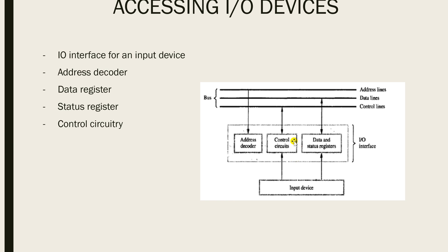Now let's see how data transfer takes place between the CPU and a connected device. Each I/O device has a set of unique addresses. When a processor places a particular address on the address line, the device recognizes that address and responds to commands issued on the control lines. The processor may request a read or write operation, and the requested data is transferred over the data lines through the data register.